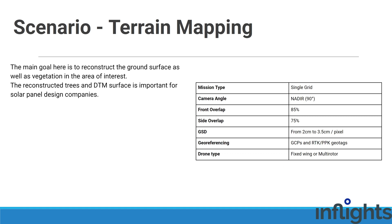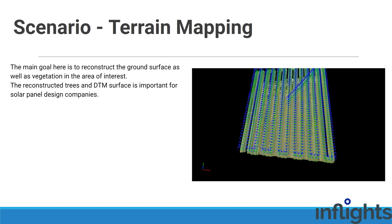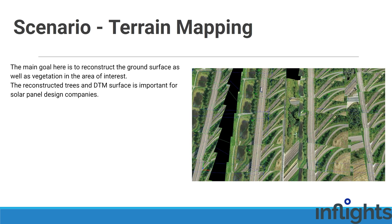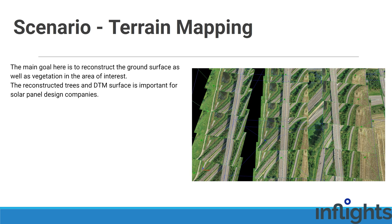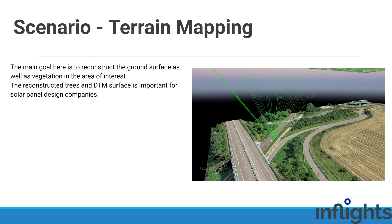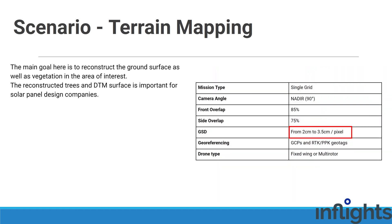Now let's take a look at some examples. For terrain dataset capture, we typically do a single grid flight with 85% front overlap and 75% side overlap with nadir camera angle. The main goal here is to reconstruct the ground surface as well as the vegetation in the area of interest. The reconstructed trees and DTM surface is important for solar panel design companies. For this, we typically do a GSD of 2 centimeters or 3.5 centimeters per pixel, depending on the client requirements.